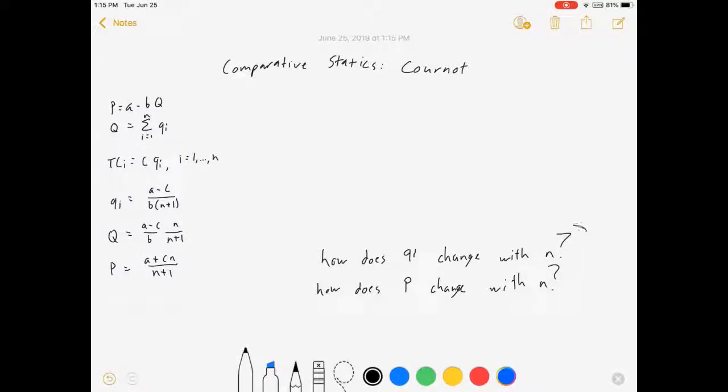I'm going to try to show you how to be able to answer questions like these: How does our Q or our P or any other outcome from our model change when we change some parameter within it? In this case, the number of firms.